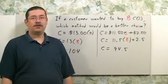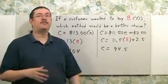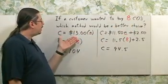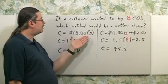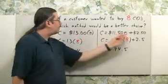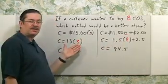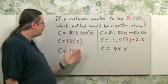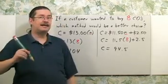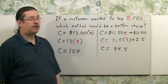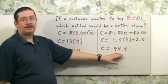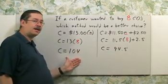To answer the second part of this task, all you need to do is write down both equations and replace N with eight, since that's the number of CDs. For the store cost equation, C equals $13 times N. The one we just figured out is the online equation. Just replace the Ns with eight. Computing this, the store cost gives $104, and the online cost gives $94.50. The customer would make a better choice by ordering the eight CDs online, since the total cost would be $94.50 versus an in-store cost of $104.